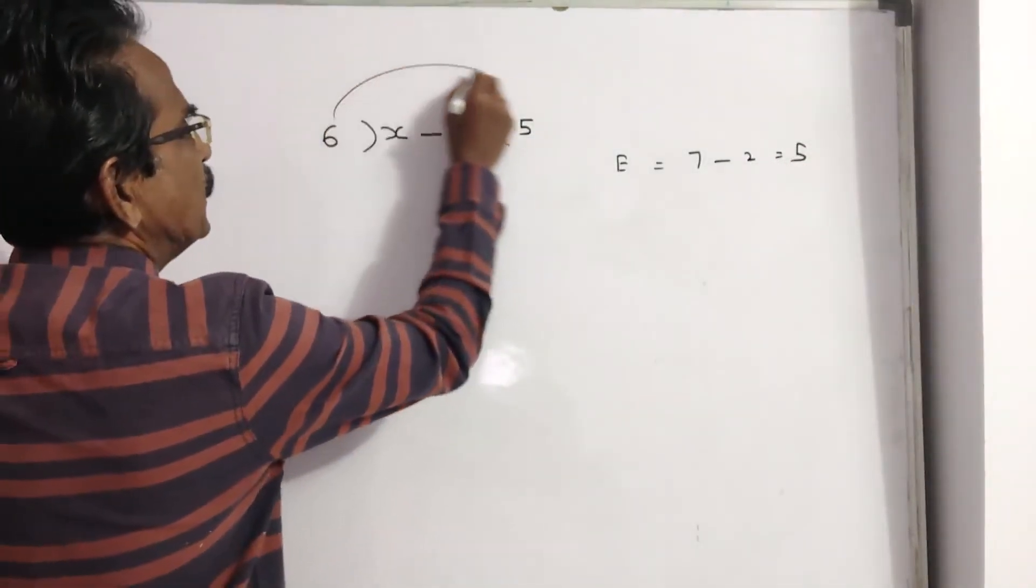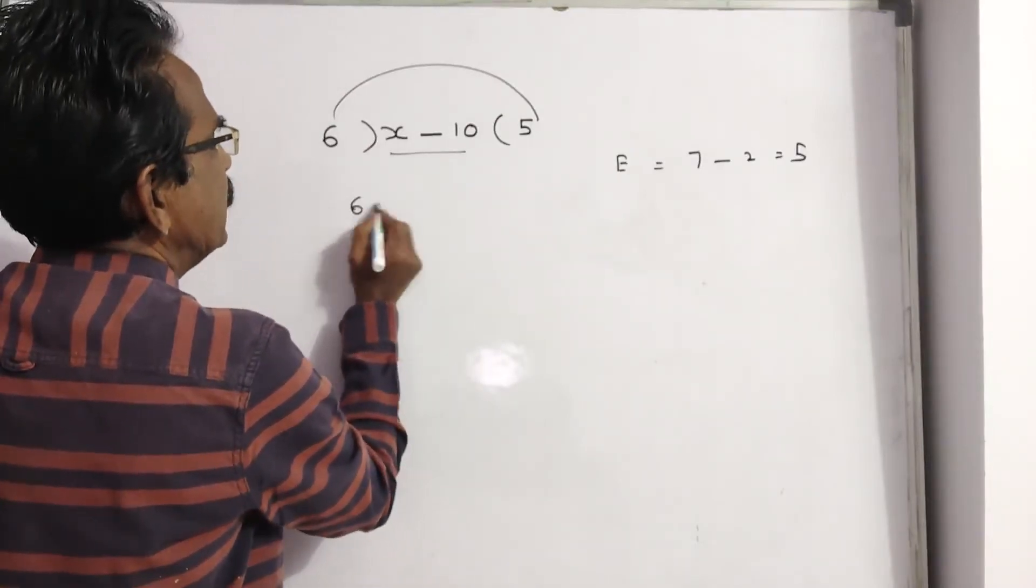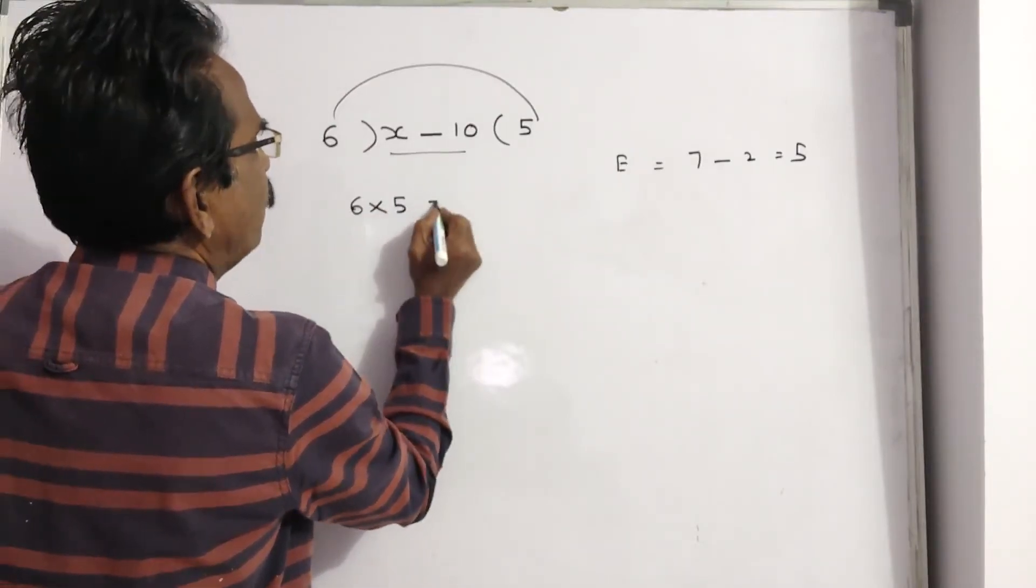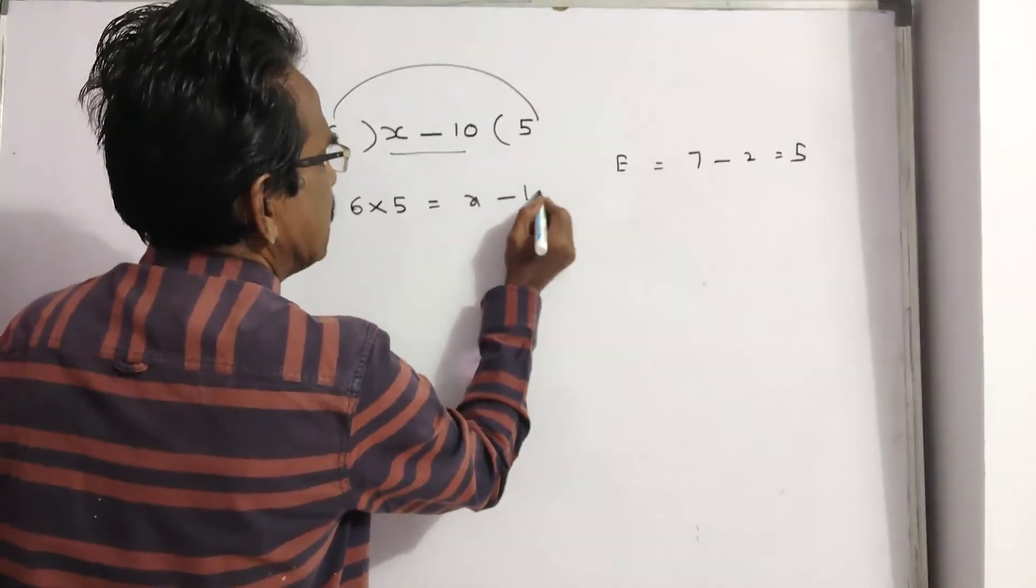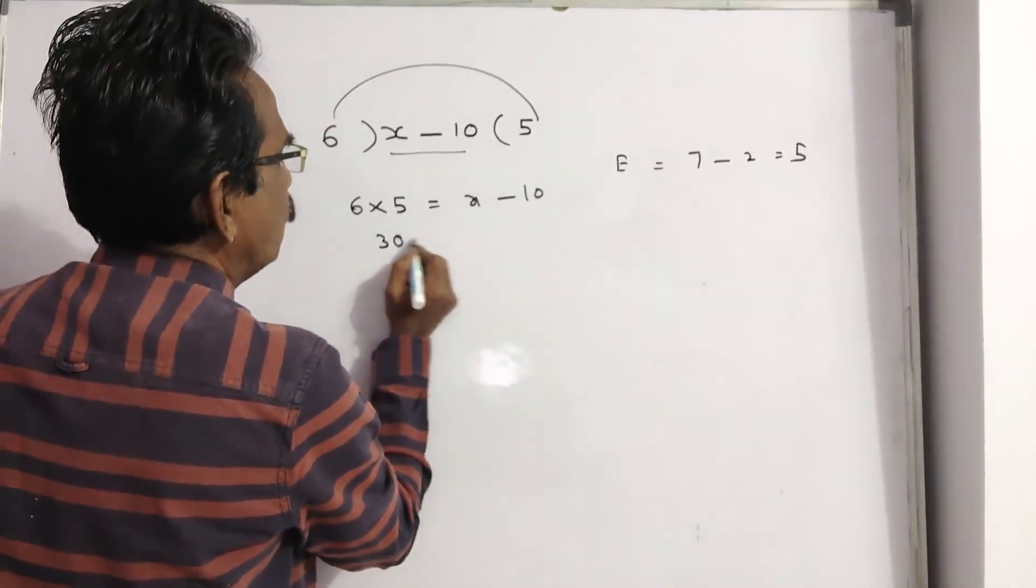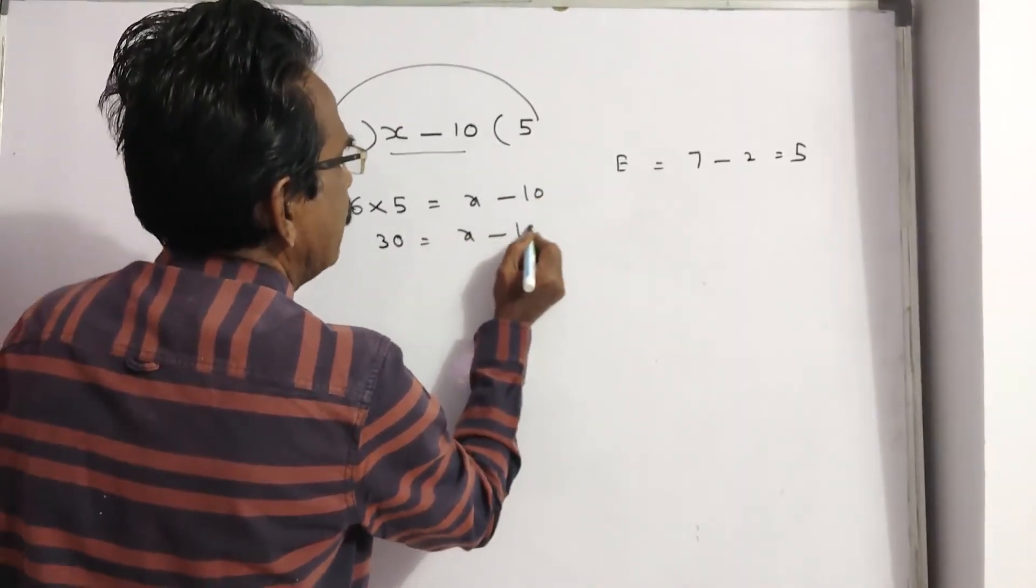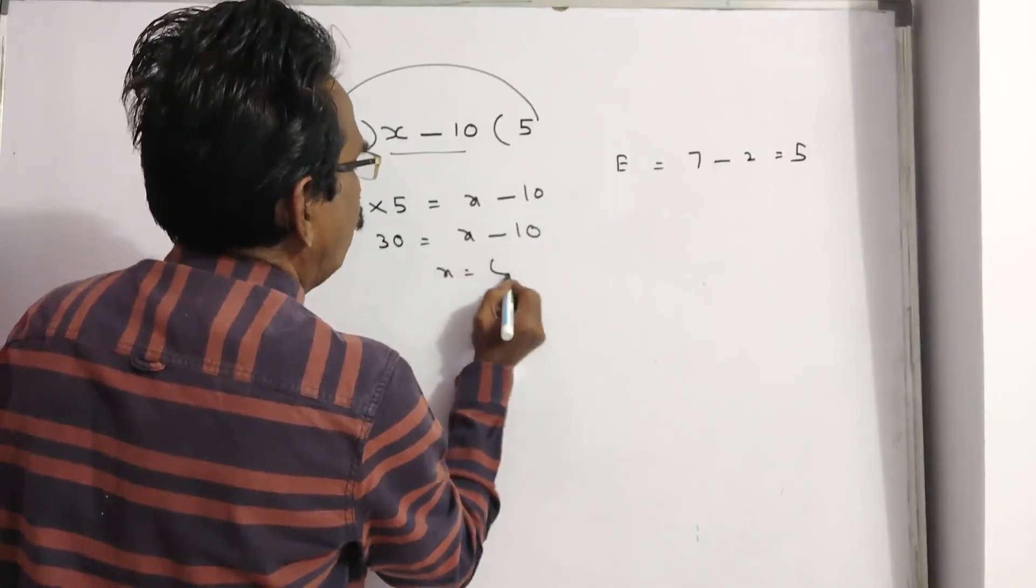Now, this times this equals this. 6 times 5 equals X minus 10. 30 equals X minus 10, or X equals 40.